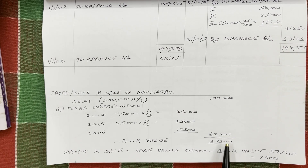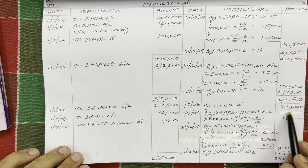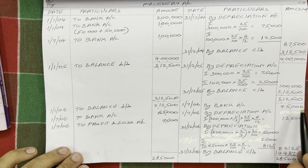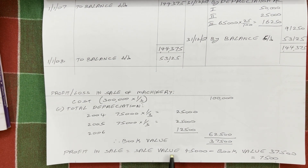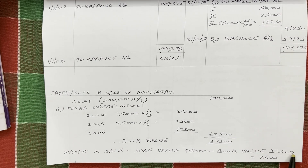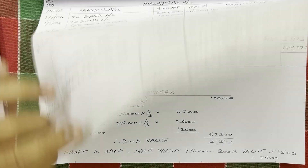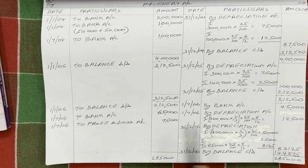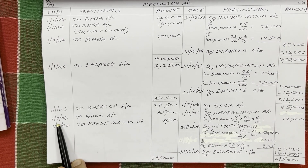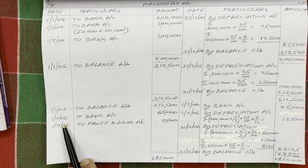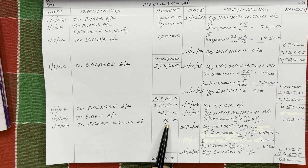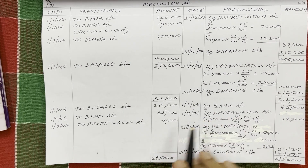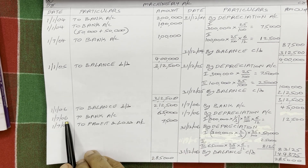The 37,500 worth asset was sold for 45,000. Since it was sold for more than book value, there is a profit. Profit = 45,000 − 37,500 = 7,500. Since profit came, on the debit side write the sale date: 1st July 2006, to profit and loss account: 7,500. The sold asset information is now complete.